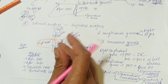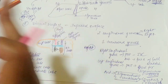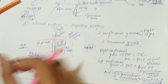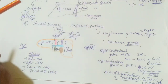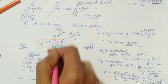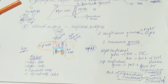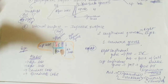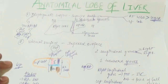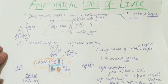To remember the positions of these lobes, just remember the alphabet: C comes before Q, so the caudate lobe is above and the quadrate lobe is below. That's the division of your lobes on the inferior surface. In the next video we will see about the ligaments of the liver. Thank you.